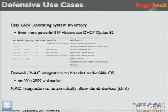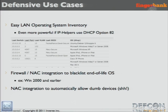Let's get into some use cases. I'm more into defensive stuff. You can do really easily LAN operating system inventory, or even flag people with Windows 95 and tell them to get something serious. Here is a screenshot of what we do in PacketFence — you see the last switch, last port, last VLAN. This is possible with DHCP option 82, implemented in Cisco switches. It's more or less reliable, but it's pretty powerful to have the two blended together: you'll know where a host is located and, because of Finger Bank technology, what OS it's running.